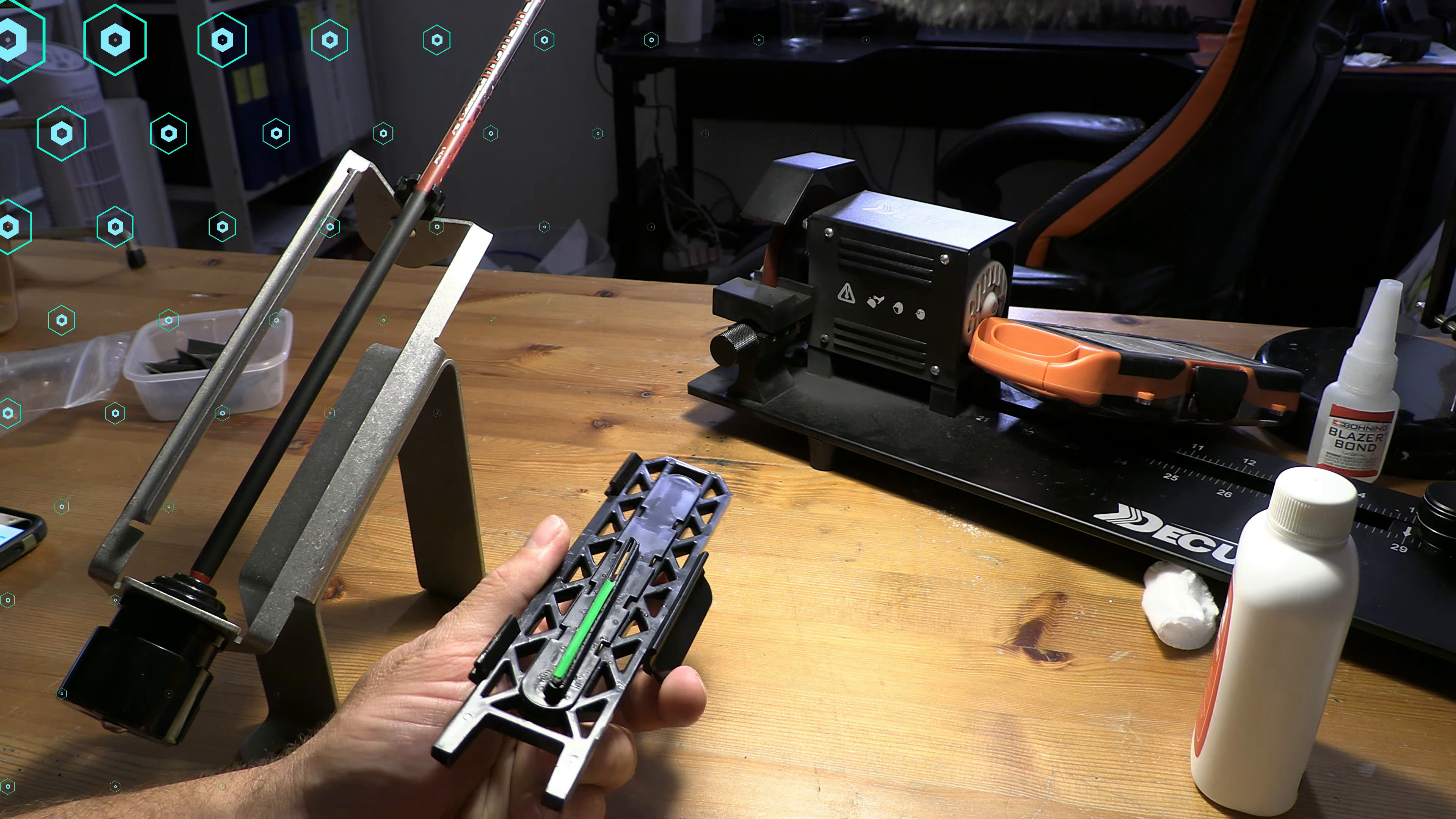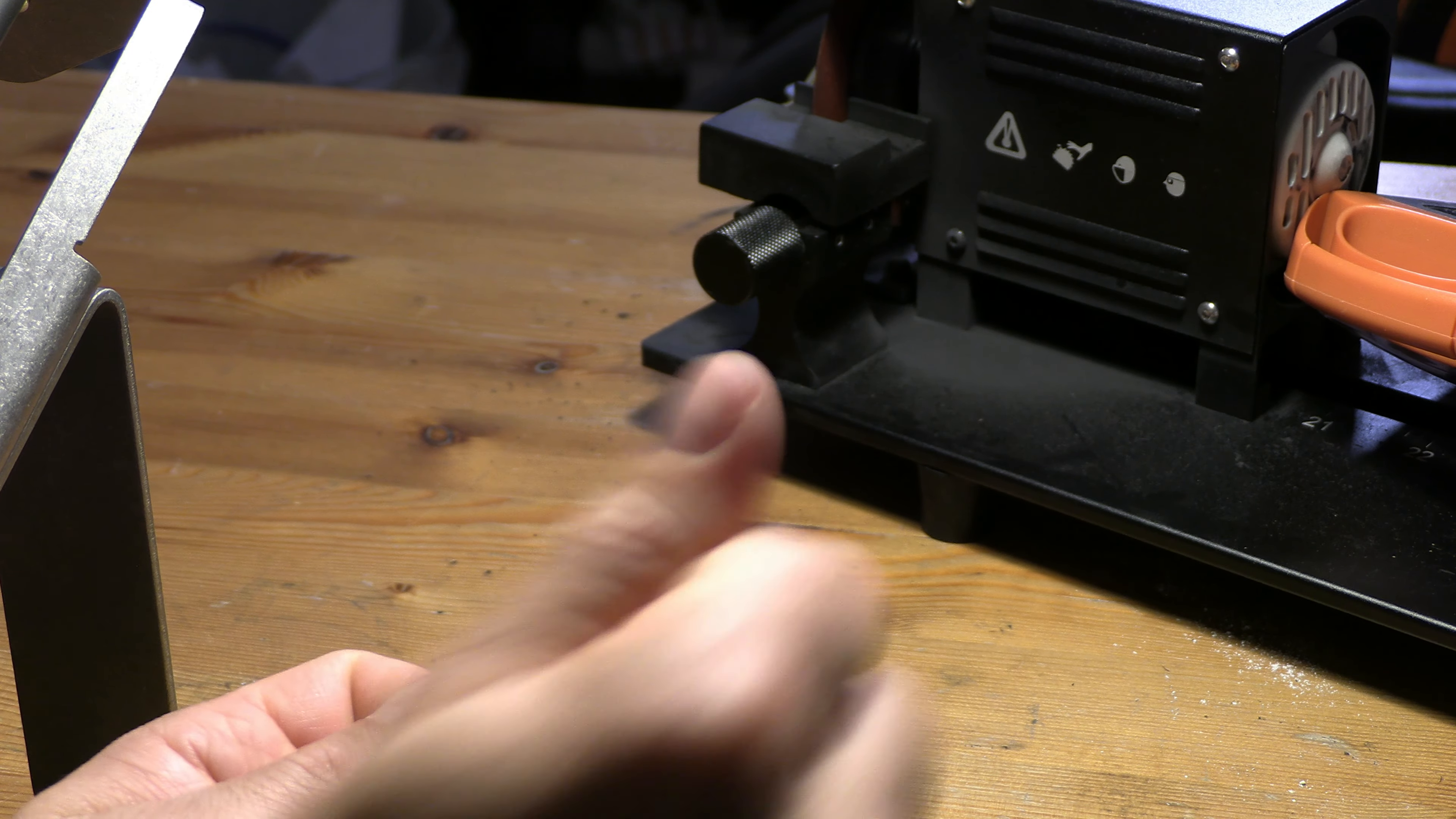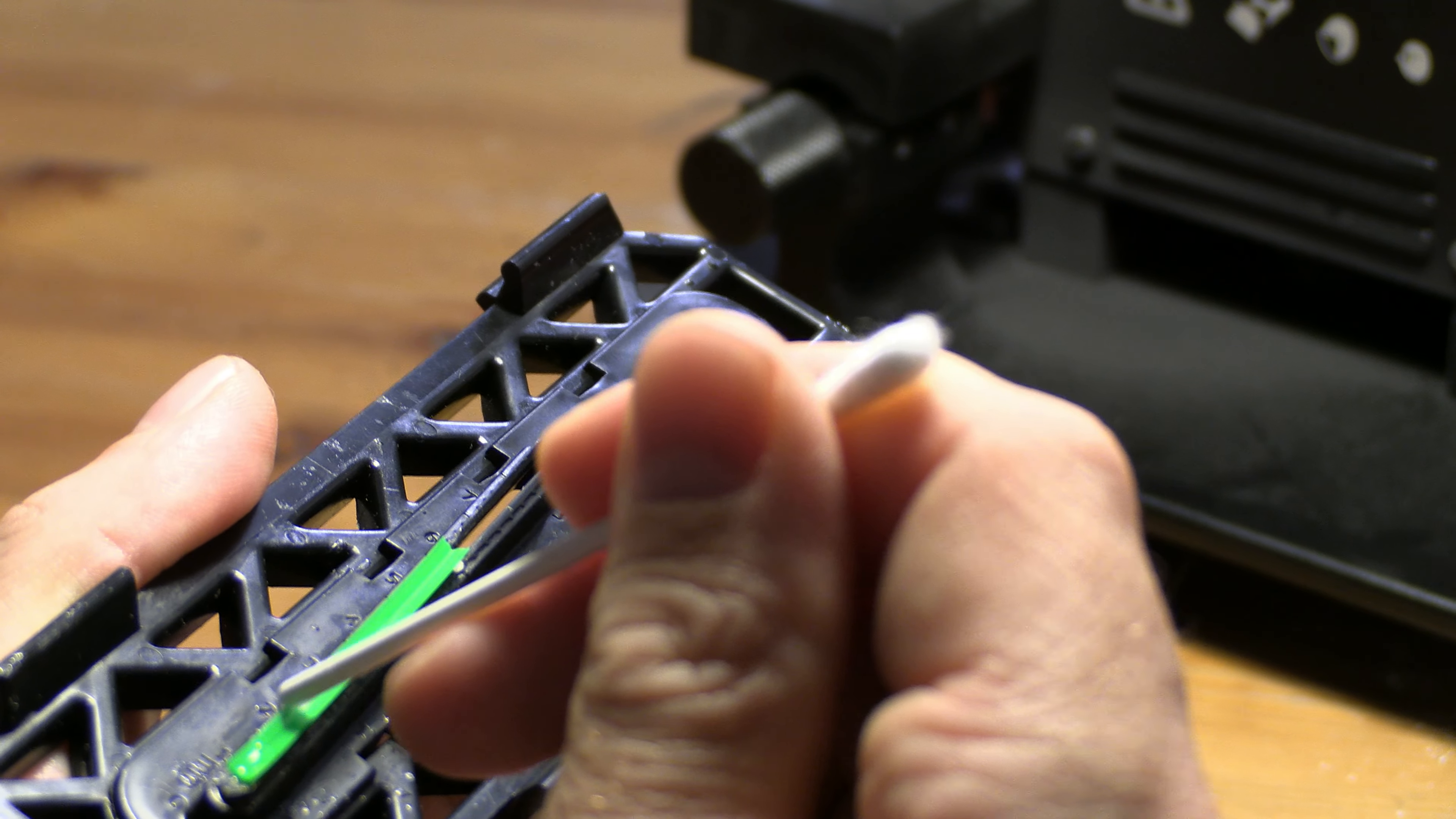So this is how I do it, and I haven't had a vane fall off in a very long time. Take a Q-tip and rip all the cotton off one end. You're gonna use this to push the glue down the length of the vane. So with the vane sitting in the jig, I put a little bead of glue like this, and then using the Q-tip, I just push the glue down the foot of the vane.